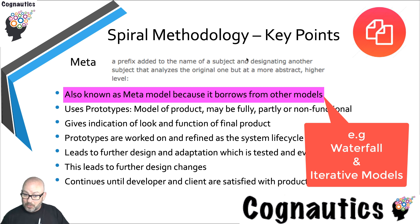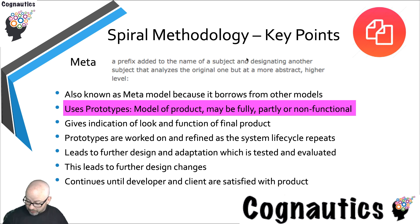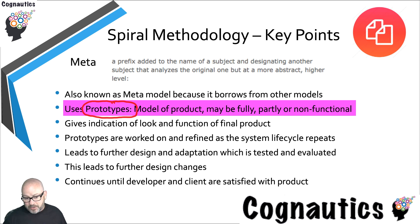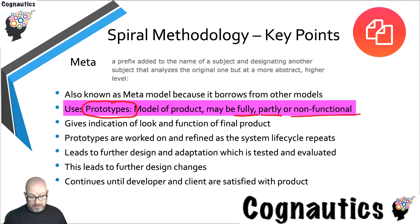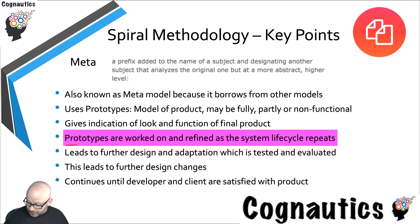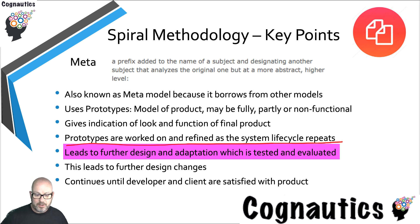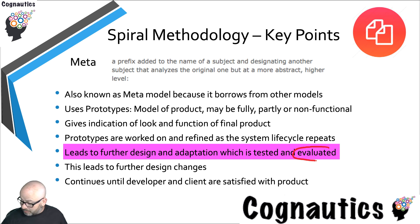This methodology uses prototypes, which gives it flexibility, but it also has some of the rigidity of the waterfall structure. The prototypes used in the spiral model can be fully functional — doing what they're supposed to do — partly functional, doing some of what they're supposed to do, or non-functional, perhaps just looking like an approximation of the final product. As you work through each prototype, you get closer and closer to the final product, leading to further design and adaptation which is tested and evaluated.